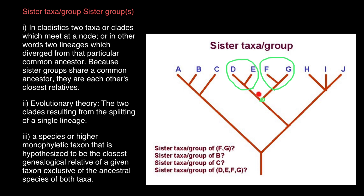We can also say that taxon E is the sister taxon to this clade. Next question: the sister taxa group of species B. We have taxon B and C, and if we go down, the most recent common ancestor is shared with species A. So species A is the sister species of B, or the sister taxon of B.